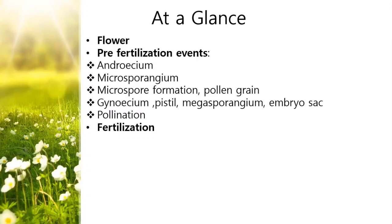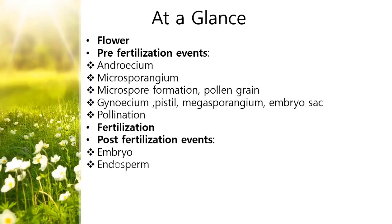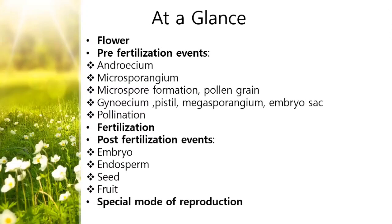During fertilization, the male gamete fuses with the female gamete. After that, post-fertilization events occur: the first one is embryo formation, then endosperm formation, and then the seed is produced inside the fruit. There are also two special modes of sexual reproduction we are studying in this chapter - that is polyembryony and apomixis. These are all the subtopics we are going to study in sexual reproduction in flowering plants.